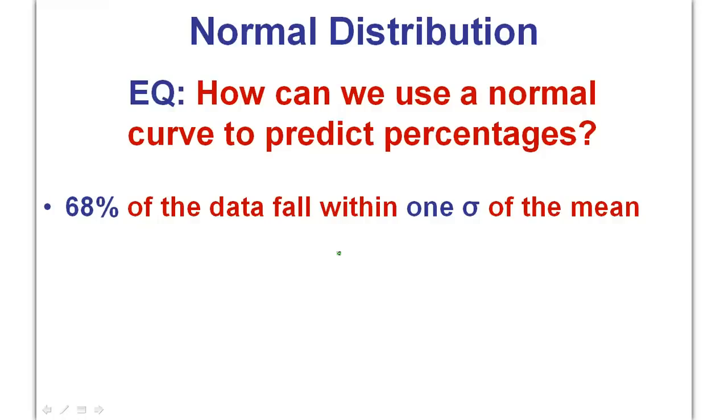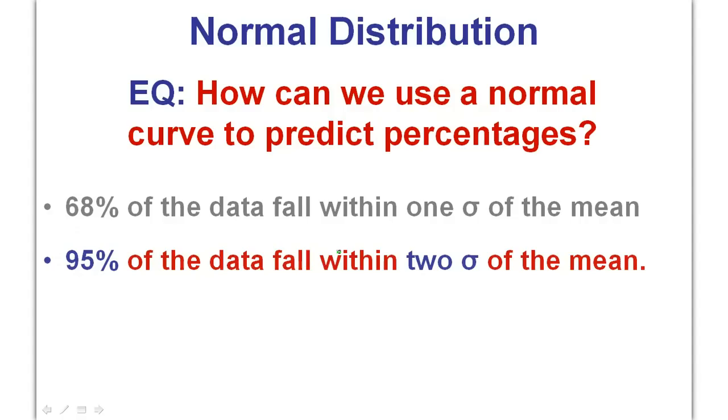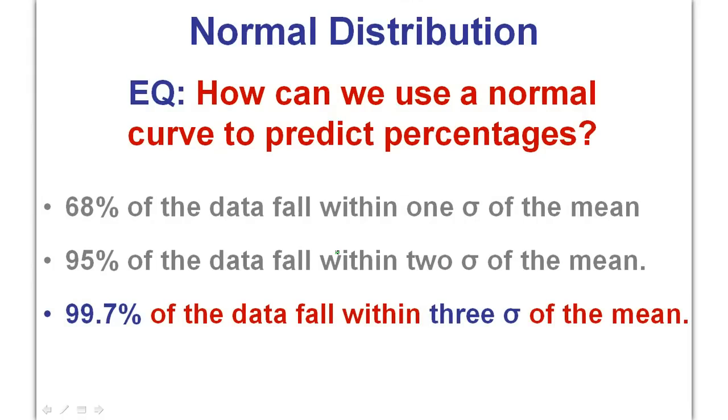So between now and two minutes from now, you guys are going to memorize these three numbers. The first one is 68%. It's all about standard deviations from the mean. The mean is in the middle. If I go out one standard deviation in either direction, I'm capturing 68% of the data. Memorize that. If I go out two standard deviations in both directions, now I've captured 95% of the data. So 68%, 95%. Memorize that. If I go out three standard deviations, now I've captured 99.7% of the data. So memorize those three numbers. One standard deviation, 68%. Two standard deviations, 95%. Three standard deviations, 99.7%. Memorize those three numbers, like right now.